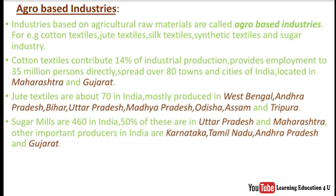Cotton textile industries provide employment to around 35 million persons directly. These industries are located in about 80 towns and cities of India, especially in West Bengal, Bihar, Uttar Pradesh, Madhya Pradesh, Odisha, Assam, and Tripura.